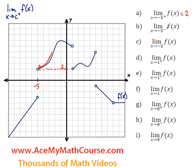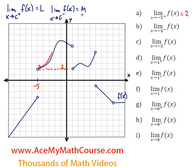Now what about the limit from the left? In this case I'll write l here, just a value, a constant. The limit as x approaches c from the left — if you see a negative or a little minus sign on top of the constant, that means we're looking for the limit as x approaches that constant from the left. I'll call it m, just another constant.